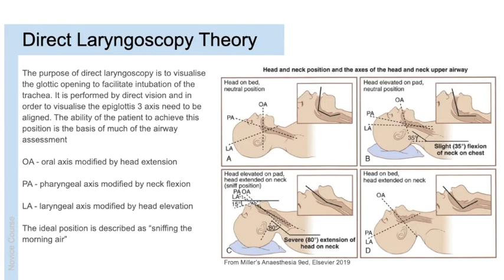This three-axes alignment only facilitates a line of sight. The ability to physically insert the blade requires adequate mouth opening and temporomandibular joint function, as well as good submandibular space. Much more therefore goes into intubation — the three-axes theory covers getting the patient into the sniffing the morning air position, which is the basis of the majority of our airway examination.